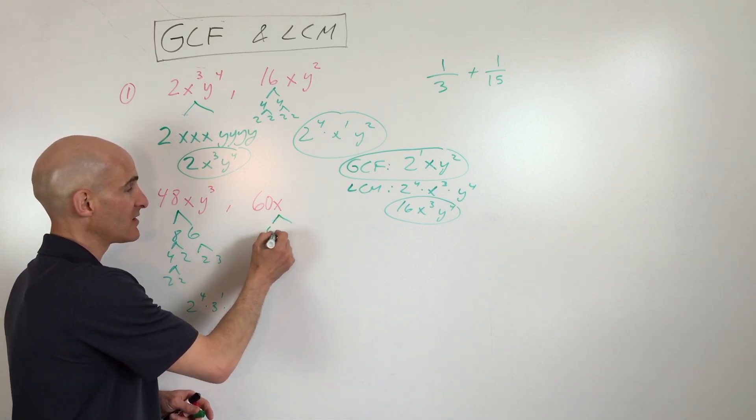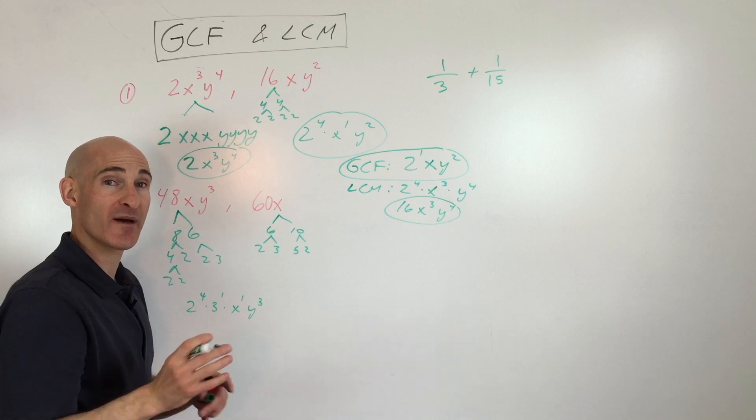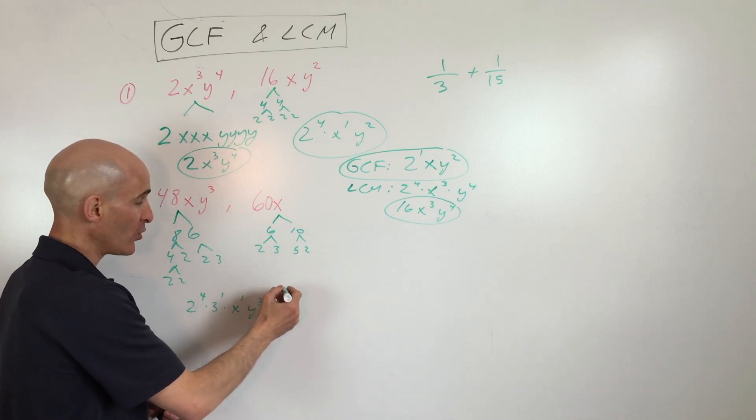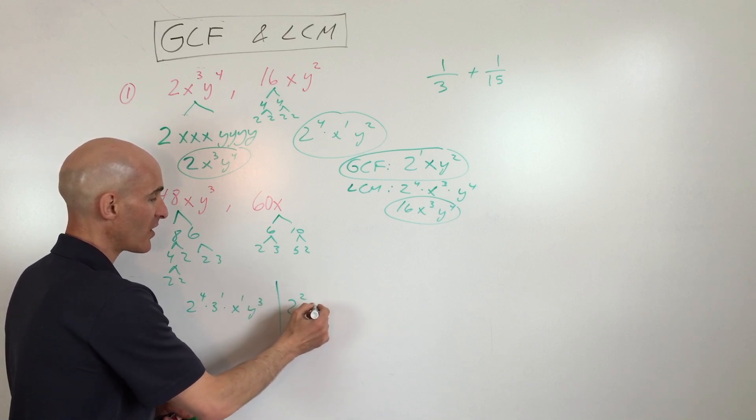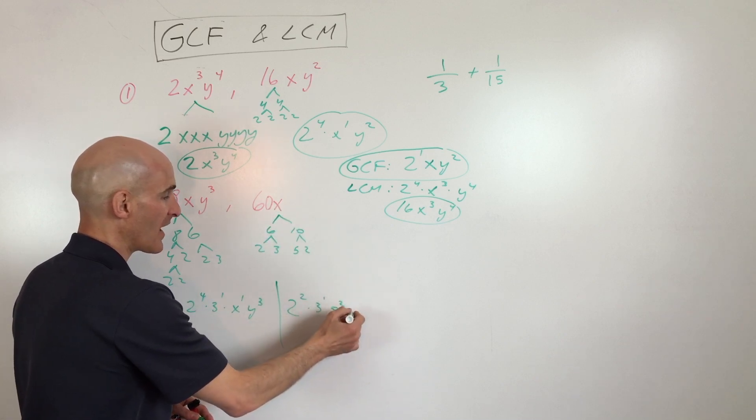60x we have 6 times 10, 2 times 3. Notice I just keep dividing these, breaking these down until they're only divisible by 1 and themselves. So they're prime numbers. And I write them in order from lowest to highest. So for this one, we have 2², 3¹, 5², and 1 x.